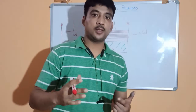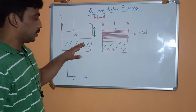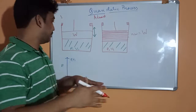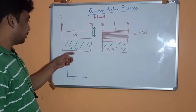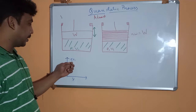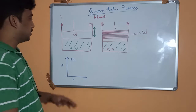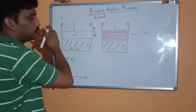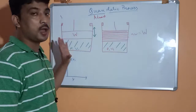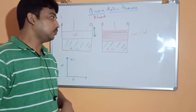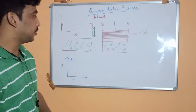To understand how a process can be almost static, let's look at this first diagram. We have some gas at a compressed state of p1, v1 — the pressure is high and volume is relatively less. This is because of the application of load W, which gives us a low volume, high pressure gas.